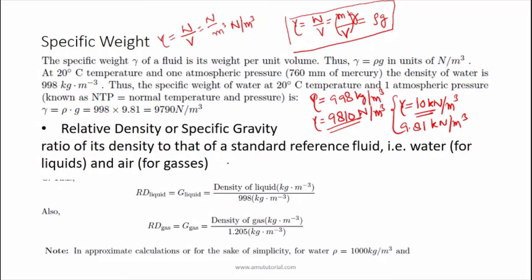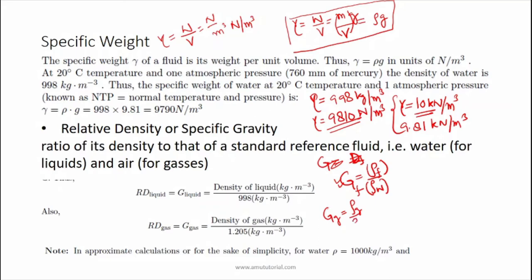Another important property is relative density or specific gravity. It is defined as the density of a fluid divided by the density of a reference fluid. For liquids we generally take water as the reference, so density of a fluid divided by density of water gives the specific gravity, denoted by symbol S. Similarly for gases, the density of the gas is divided by the density of air.